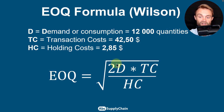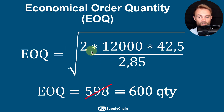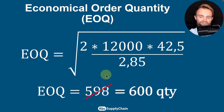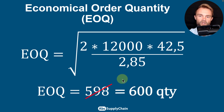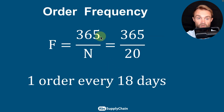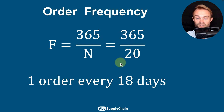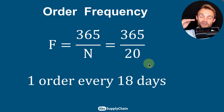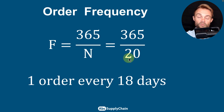Now we have all inputs: demand of 12,000 units, transaction cost of $42.50, and holding cost of $2.85. Applying the formula — square root of 2 × 12,000 × 42.5 ÷ 2.85 — gives 598. I round up to 600 units per order. Dividing the annual demand by the EOQ gives 20 orders per year, or one order approximately every 18 days, assuming stable demand.